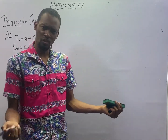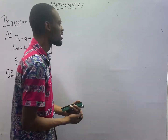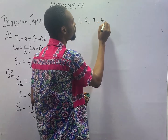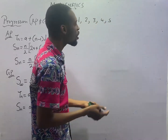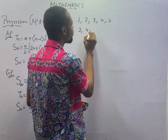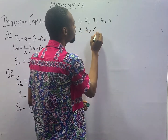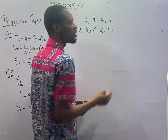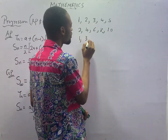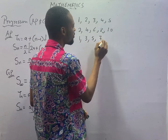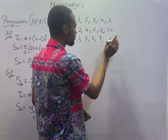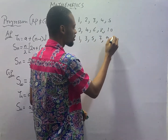If you choose to progress this way: 1, 2, 3, 4, and 5. Or you choose to progress this way: 2, 4, 6, 8, 10. Or you choose to progress this way: 1, 3, 5, 7, 9, 11.